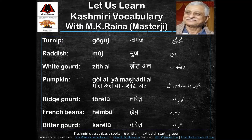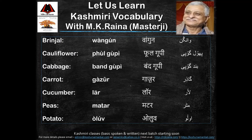Ridge gourd gai toriel; french beans gai hember; bitter gourd gai kariel; brinjal gai wangun; cauliflower gai fur gupi; cabbage gai band gupi; carrot gai gazar.